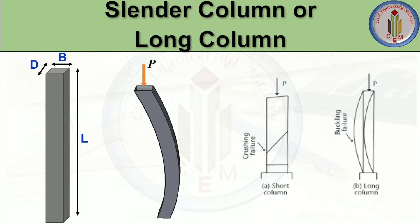As we all know, a column is a compression member. Columns can be classified according to their shape and size. For example, according to shape, we can classify them into square columns, rectangular columns, circular columns, and so on. Similarly, according to the loads acting on the column, we can classify them into axially loaded columns, axial load with uniaxial bending, and axial load with biaxial bending.